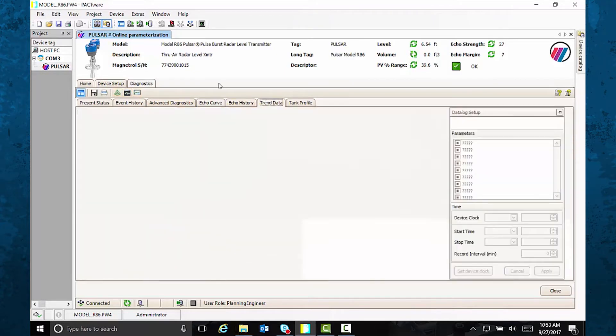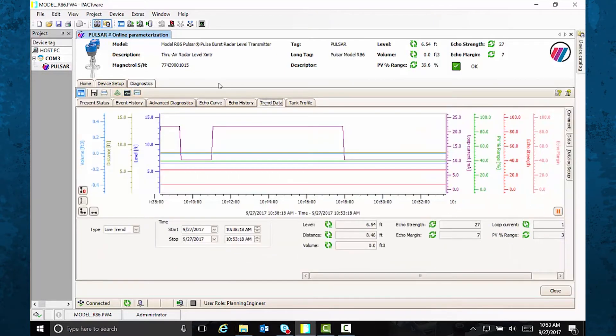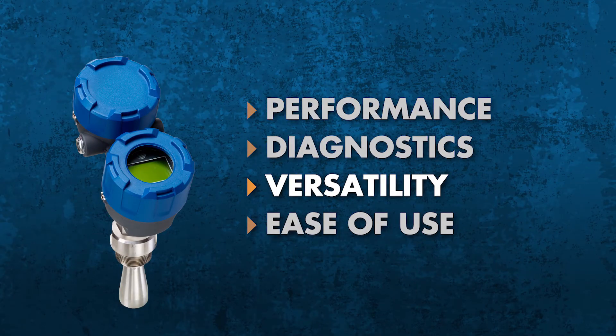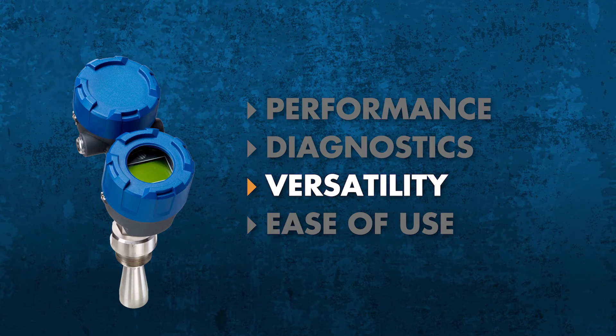Here's another smart idea: download our Model R86 DTM for use with an open-source program like PACTware, and keep your workers off the tank. They'll get all the information they need from their laptops while sitting safely in the control room.